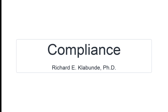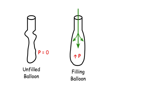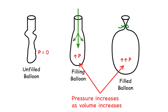To understand compliance, let's begin with an uninflated rubber balloon. When the balloon is empty and the stem is open to the atmosphere, the pressure inside is zero. If we blow air into the balloon, the volume of the balloon will expand. Because the walls of the balloon are stretched when the volume is increased, this generates a pressure inside the balloon that will be directly related to the expanded volume. Therefore, pressure increases as volume increases.